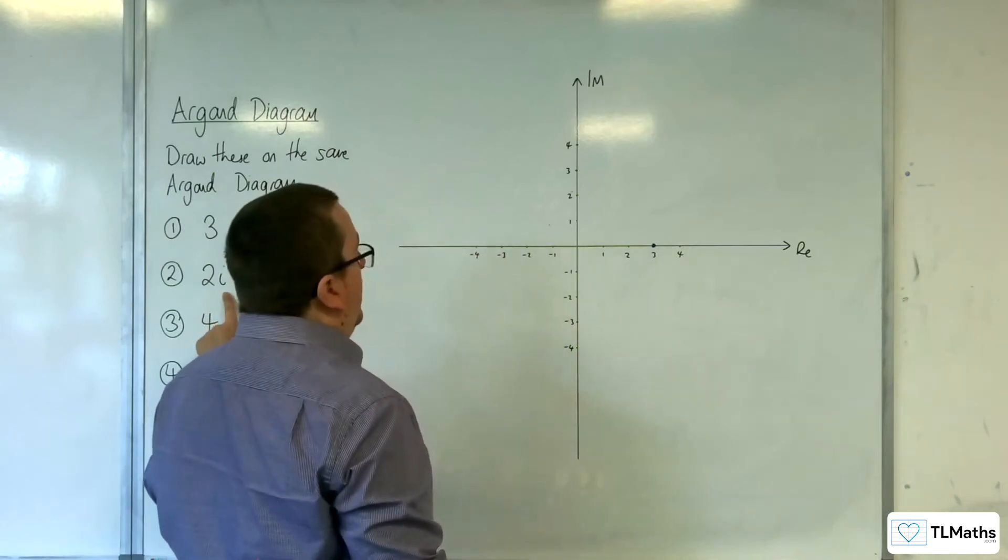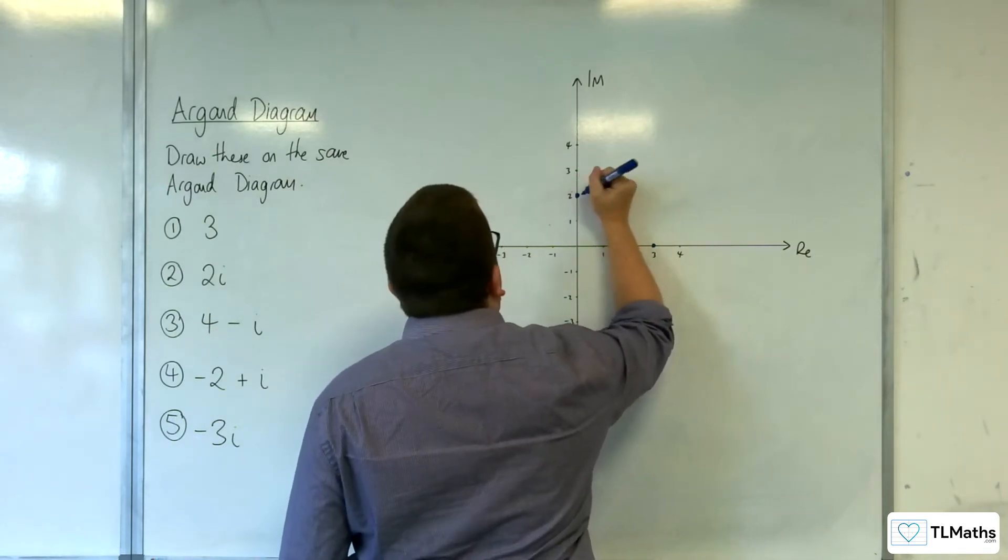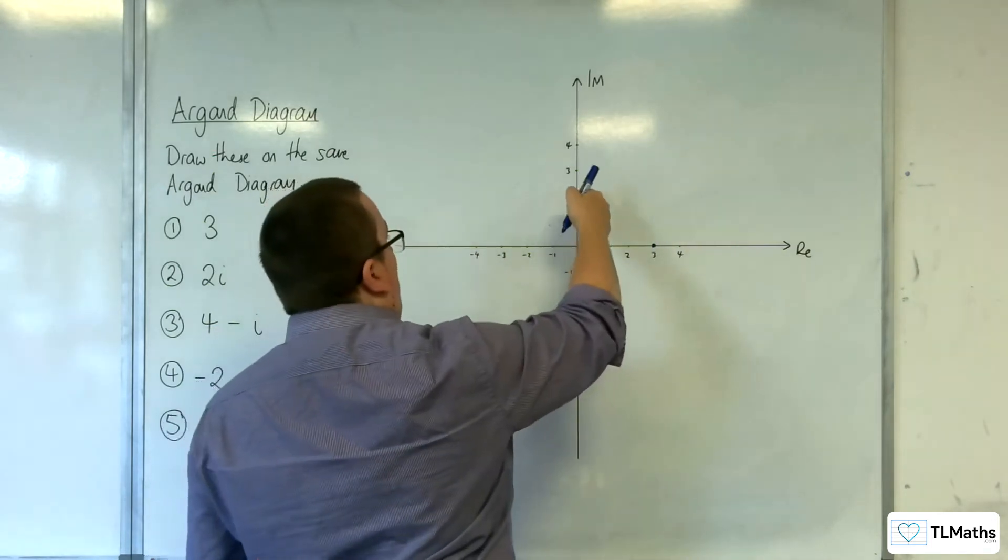2i, on the other hand, is going to be two on the imaginary axis. There is no real part. And so 2i is represented by that point there.